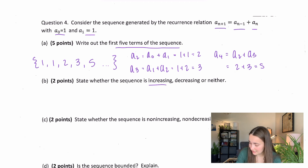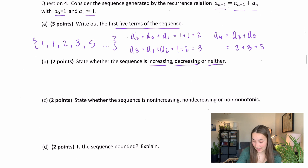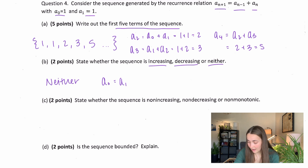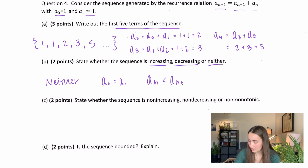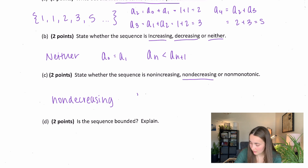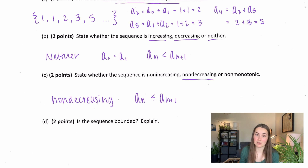State whether the sequence is increasing, decreasing, or neither. It's neither — we know it's not decreasing, but it's not strictly increasing because a_0 equals a_1. For strictly increasing we need every a_n < a_{n+1}, and 1 is not less than 1. However, it is non-decreasing, meaning a_n ≤ a_{n+1}, which allows those first two terms to be equal. None of the terms are getting smaller.